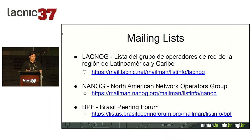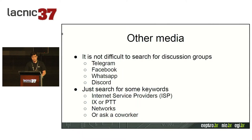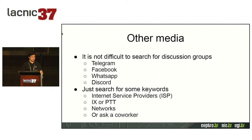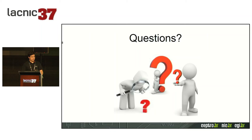The Internet is formed by different autonomous systems each trying to communicate with the others. It's not difficult to find discussion groups on social media such as Telegram, Facebook, and WhatsApp. When there are problems, people publish there and form response groups or working groups. Don't work alone — publish your information and request assistance. Information groups in your country are very important to participate in.